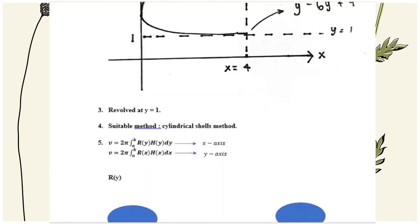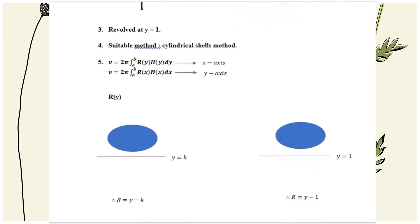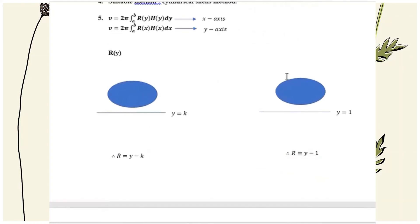The suitable method is the cylindrical shell method. In the shell method, we have two formulas: the first for equations in terms of y (revolved about the x-axis), and the second for equations in terms of x (revolved about the y-axis). Because the equation is revolved about the x-axis, we use the first formula. We find r(y) using this method.